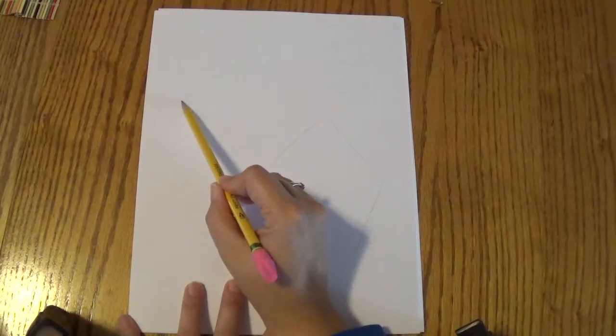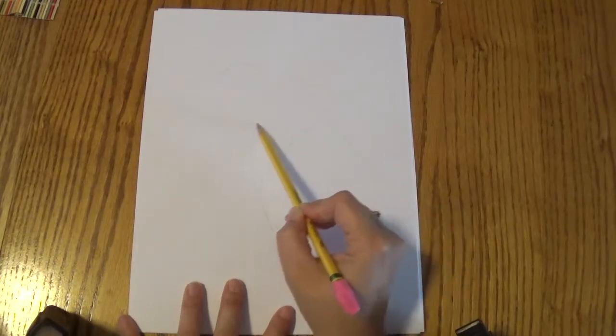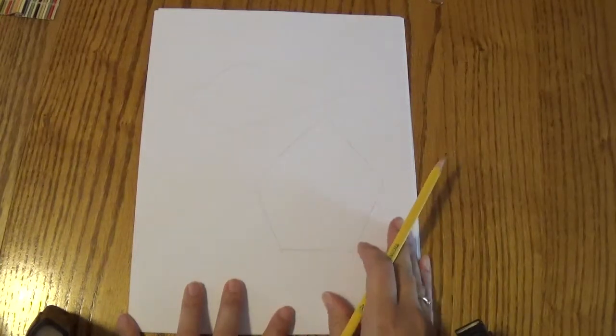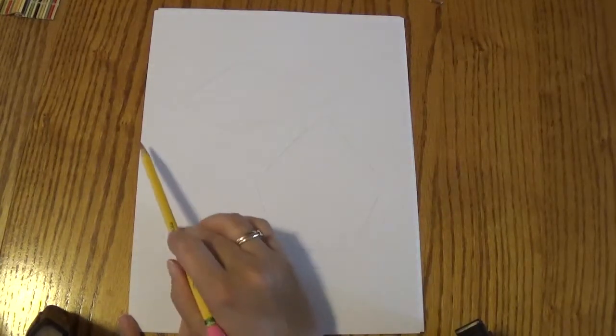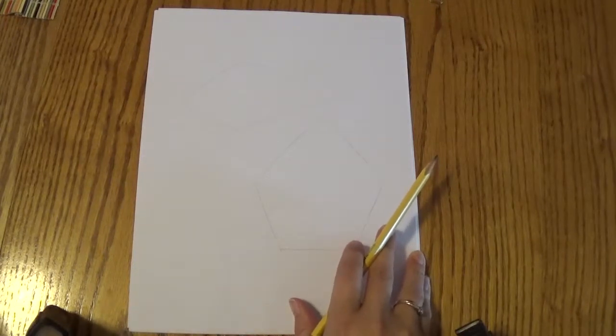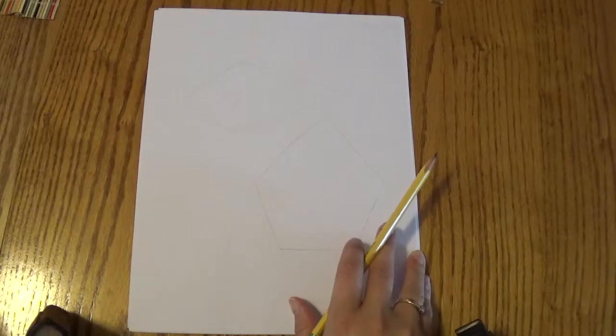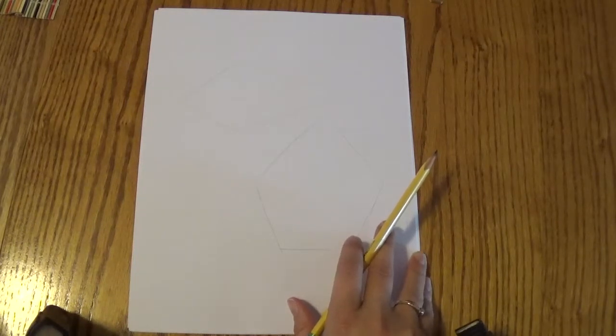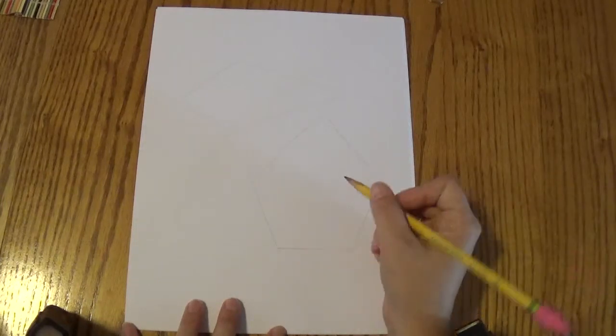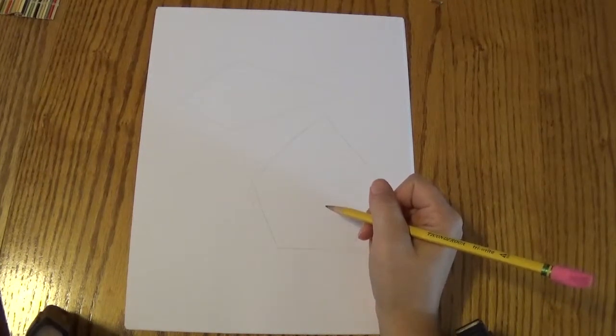And then we're going to do the same thing on the bottom. It's going to look kind of like a sideways kite. So nice and light. It's not quite touching the side over here. So take your time with it. Alright, once you have that, we are going to start to make it look like a map of Michigan instead of just two shapes.